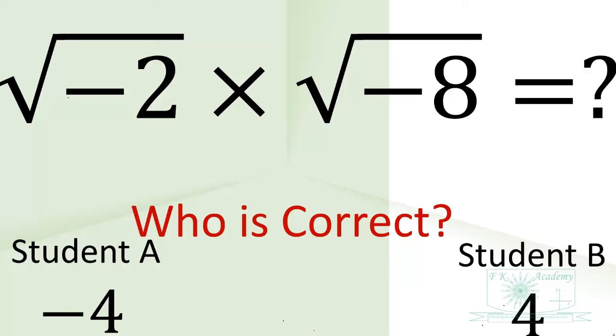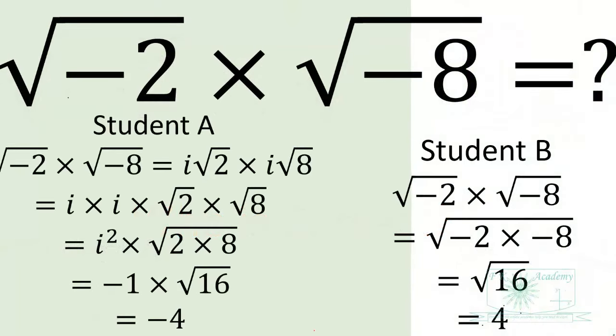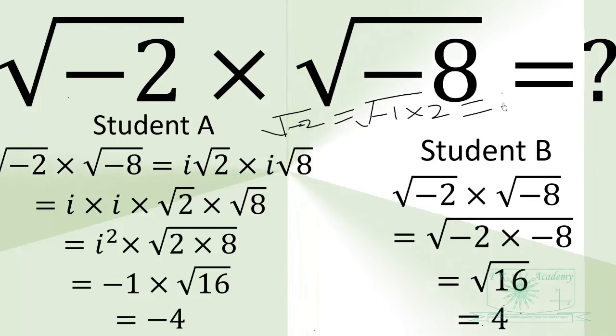First, let us see how they solved the question. Student A observed square root of negative 2 as square root of negative 1 times 2, and this gives Student A square root of negative 1 times square root of 2.